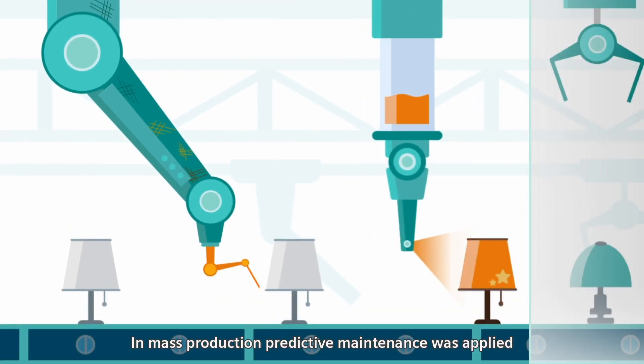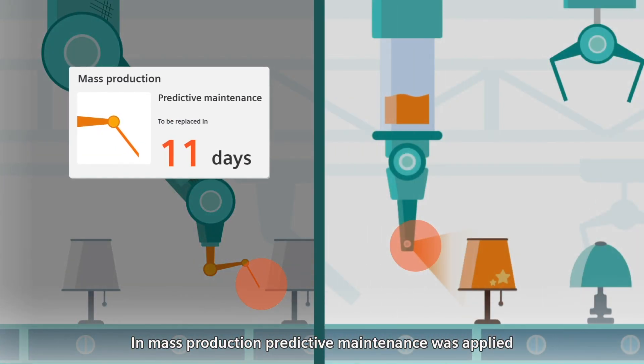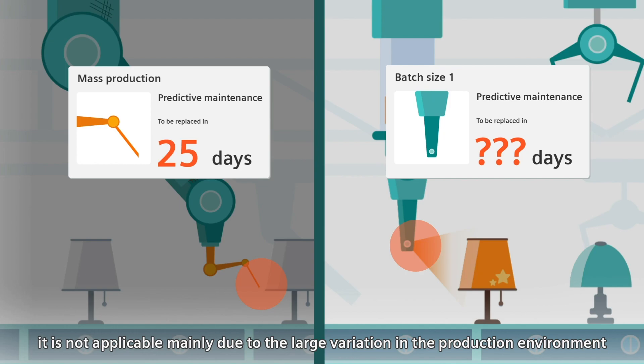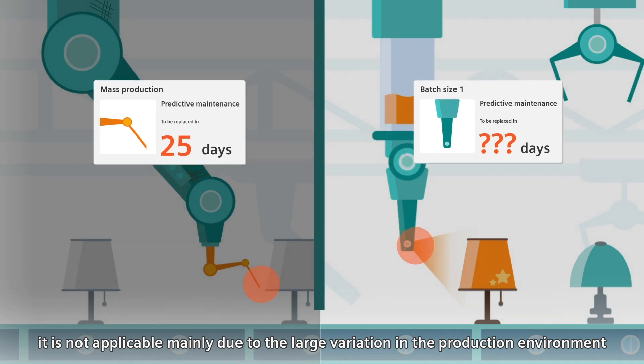In mass production, predictive maintenance was applied. However, for batch size 1, it is not applicable mainly due to the large variation in the production environment.